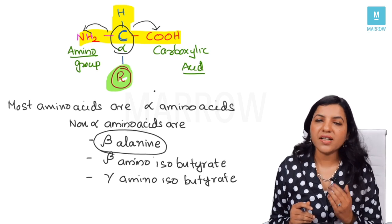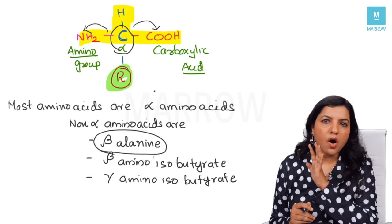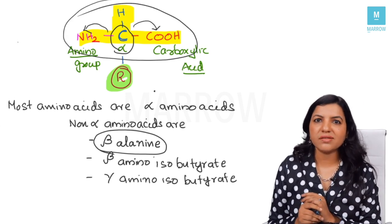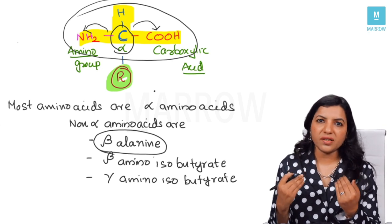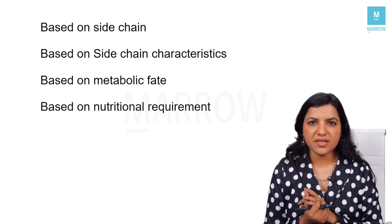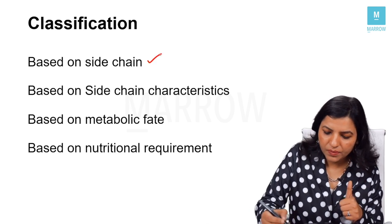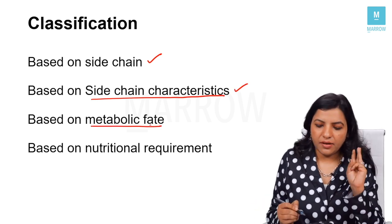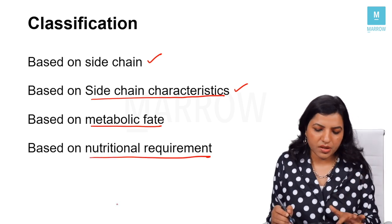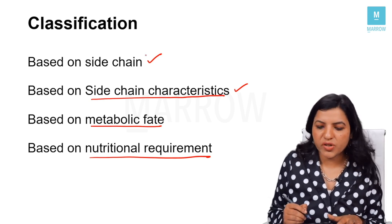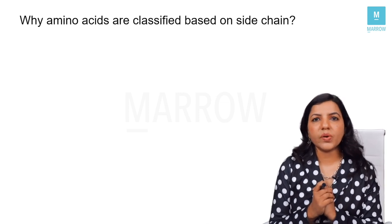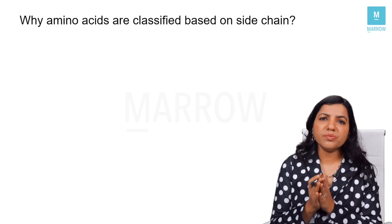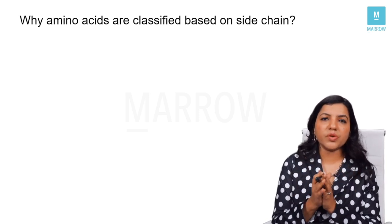All amino acids have the amino group, the carboxylic acid group, and the H in common. Now we are going to classify amino acids. There are different classifications: one is based on the side chain characteristics, the second is based on the metabolic fate, and the third is based on nutritional requirement. First we will see the classification based on the side chain.